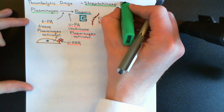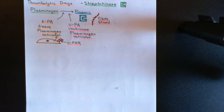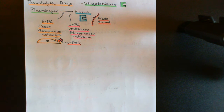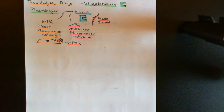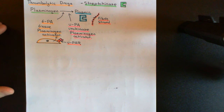Streptokinase is also very useful to clinical pharmacologists because we can isolate this enzyme and give it to people who have suffered an acute coronary syndrome. It will go to the site of the thrombus, activate plasminogen proteins in the blood near the thrombus to plasmin, and they will then break down the blood clot — much faster than with the endogenous mechanisms alone.